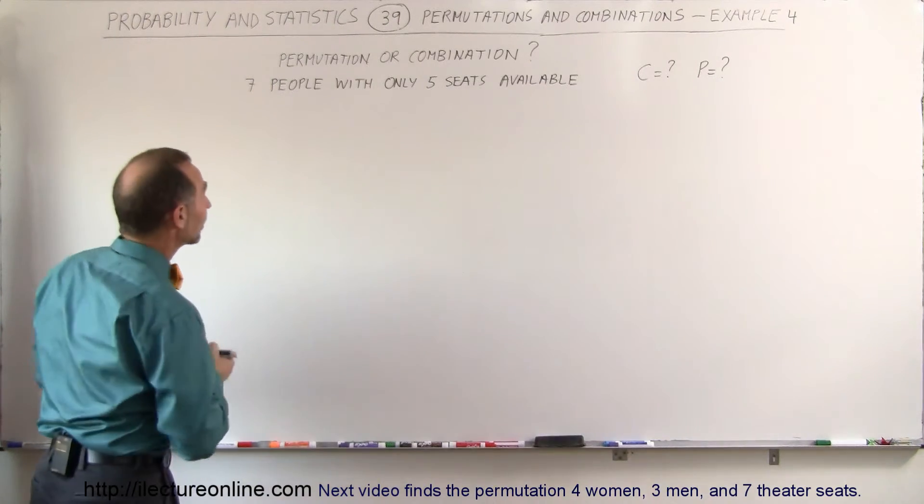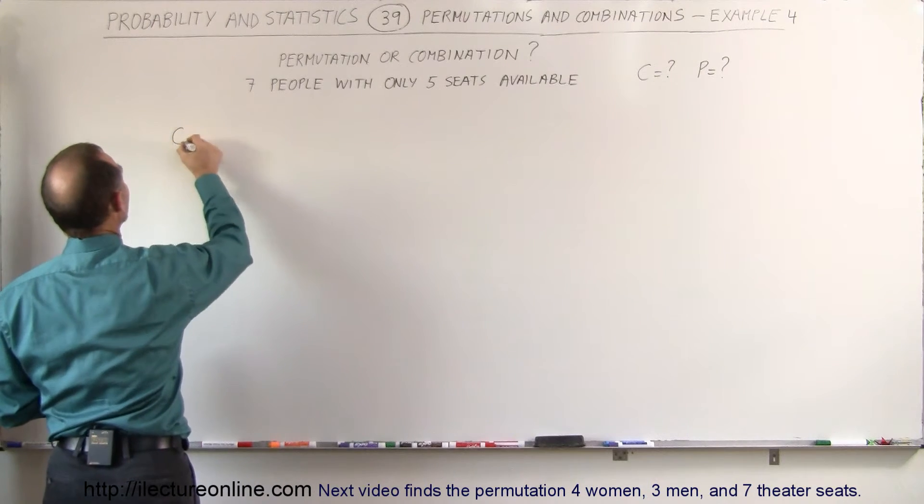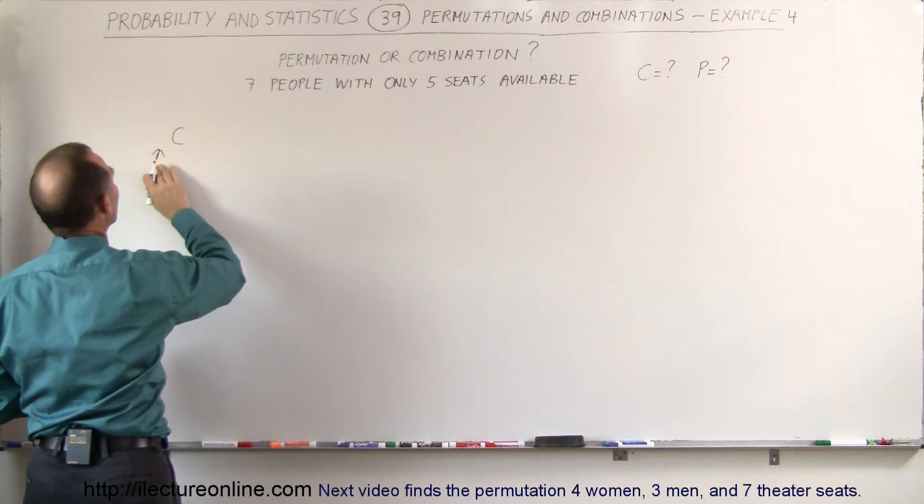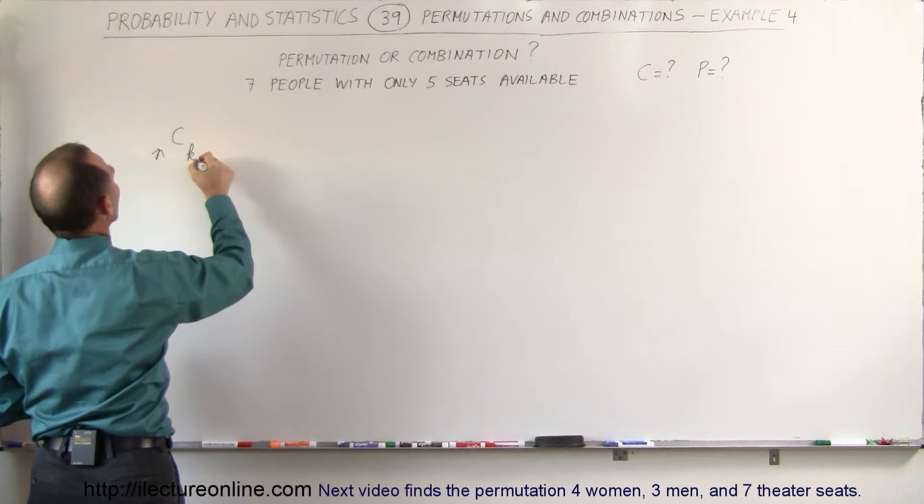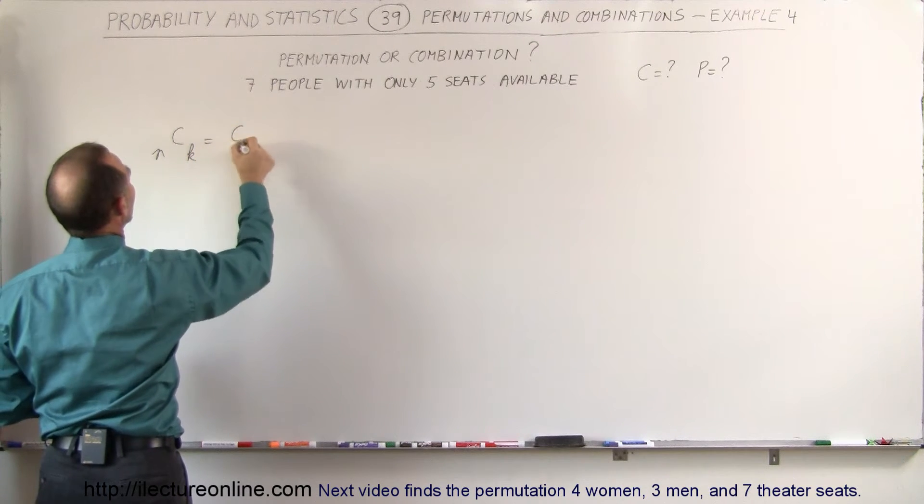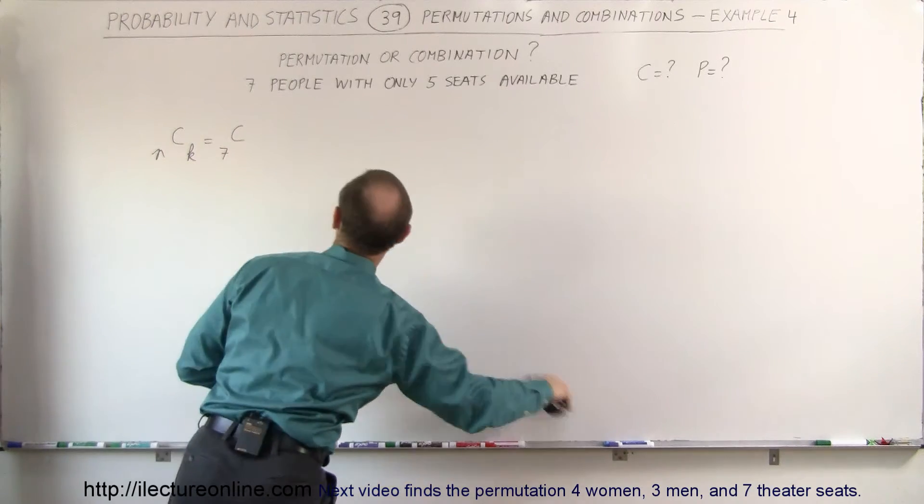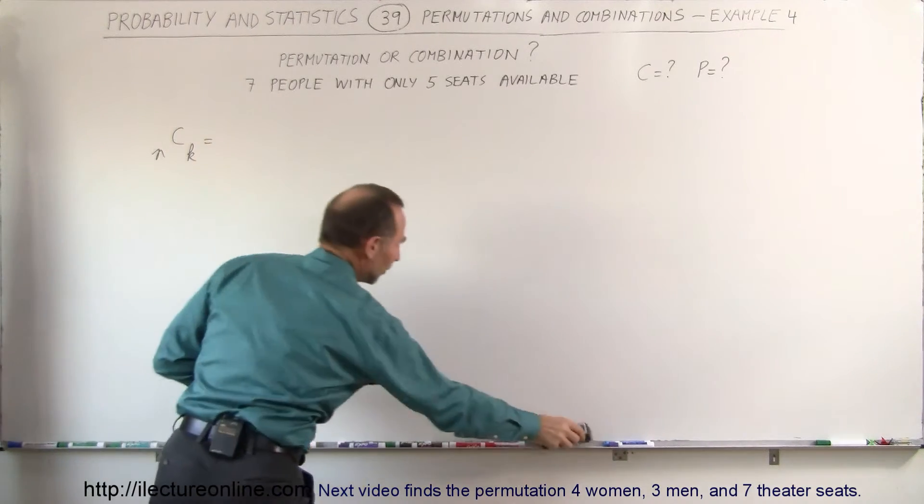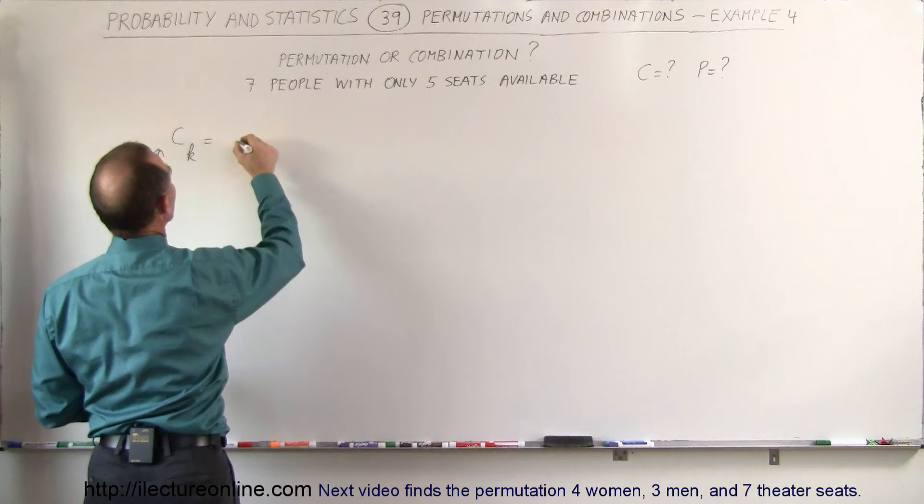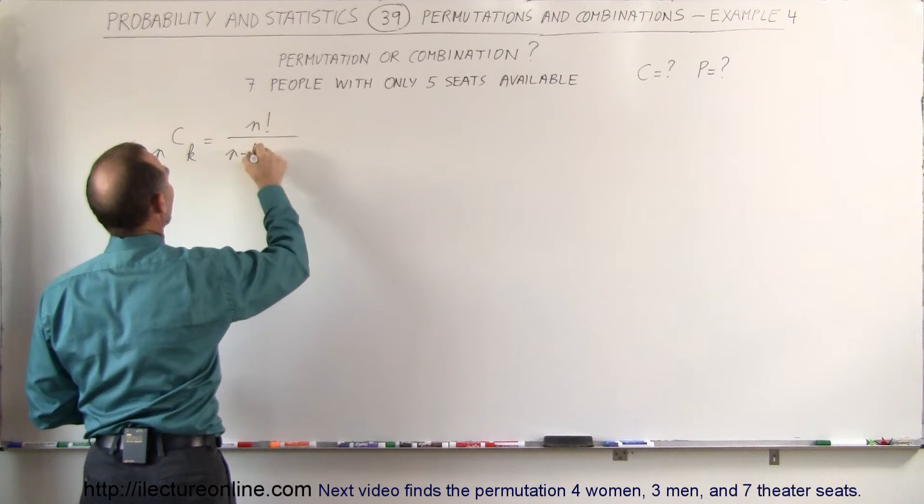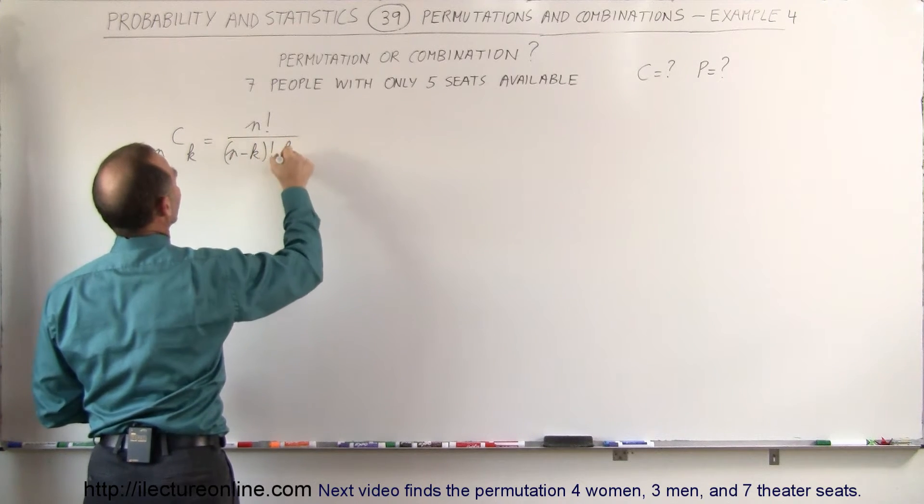With combinations we write C when we have n number of people with only k number seats. So in this case that would be C when you have seven people. Let me write the general equation down first. The general equation for this would be that we have n factorial divided by n minus k factorial times k factorial.